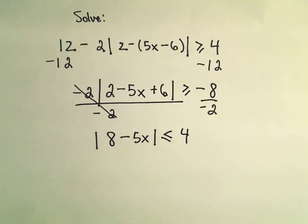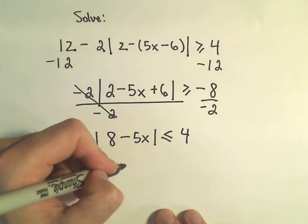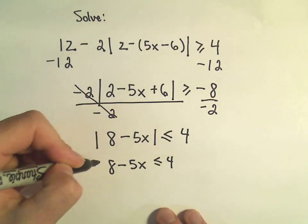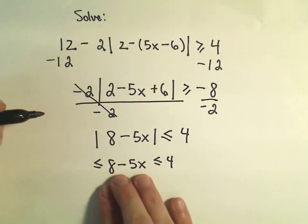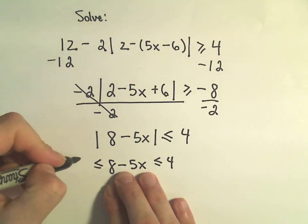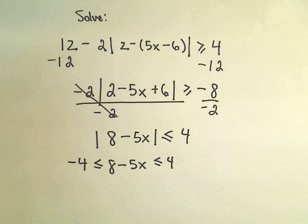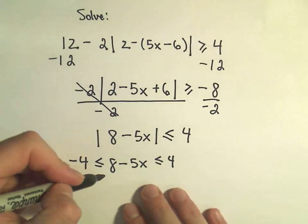And again, for this type of inequality, I just remove the absolute value and also make the quantity inside the absolute value greater than the negative of the number that we had.